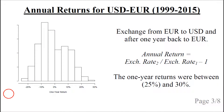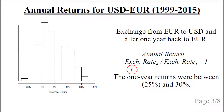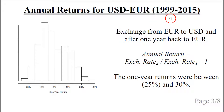Let's look at the reason why currency hedging is necessary. Let's say we exchange from euro to US dollars, and after one year we exchange back to euro. The formula for calculating the annual return is: the exchange rate after one year divided by the exchange rate for this year, minus one. If we do that for all exchange rates in the period 1999 to 2015 and plot it in a histogram, then we get this.